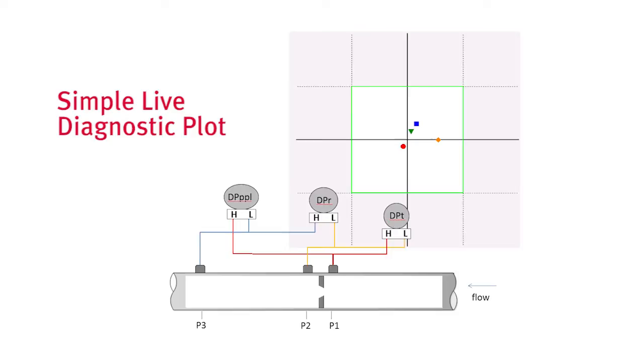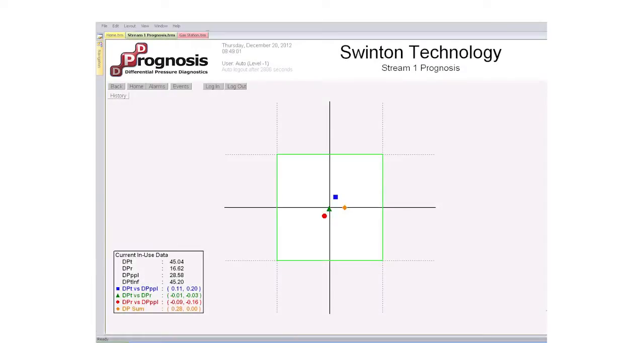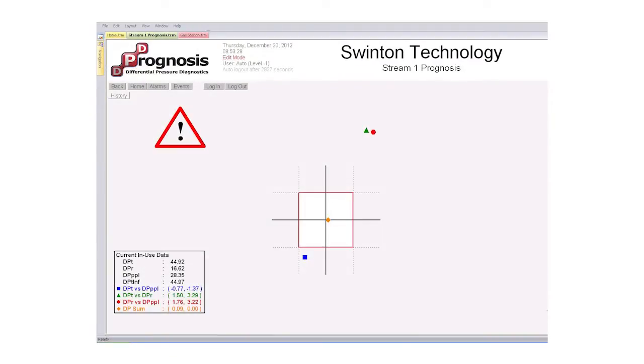A simple live diagnostic screen is shown in the control room. The diagnostic plot comprises four points around an origin and a box. The concept is very simple: if the points remain in the box, this ensures good flow measurement.